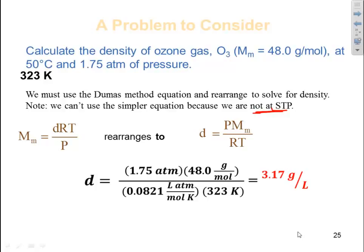So density is equal to 1.75 atmospheres, which is my pressure. My molar mass is 48.0 grams per mole. My R is 0.0821 liter atmospheres per mole Kelvin. And my temperature, my 50 degrees C has been changed to 323 Kelvin. Cancel my units. I'm left with grams per liter. Multiply my numbers, 3.17 grams per liter. It's the density of ozone. Typical density units for a gas should be grams per liter.